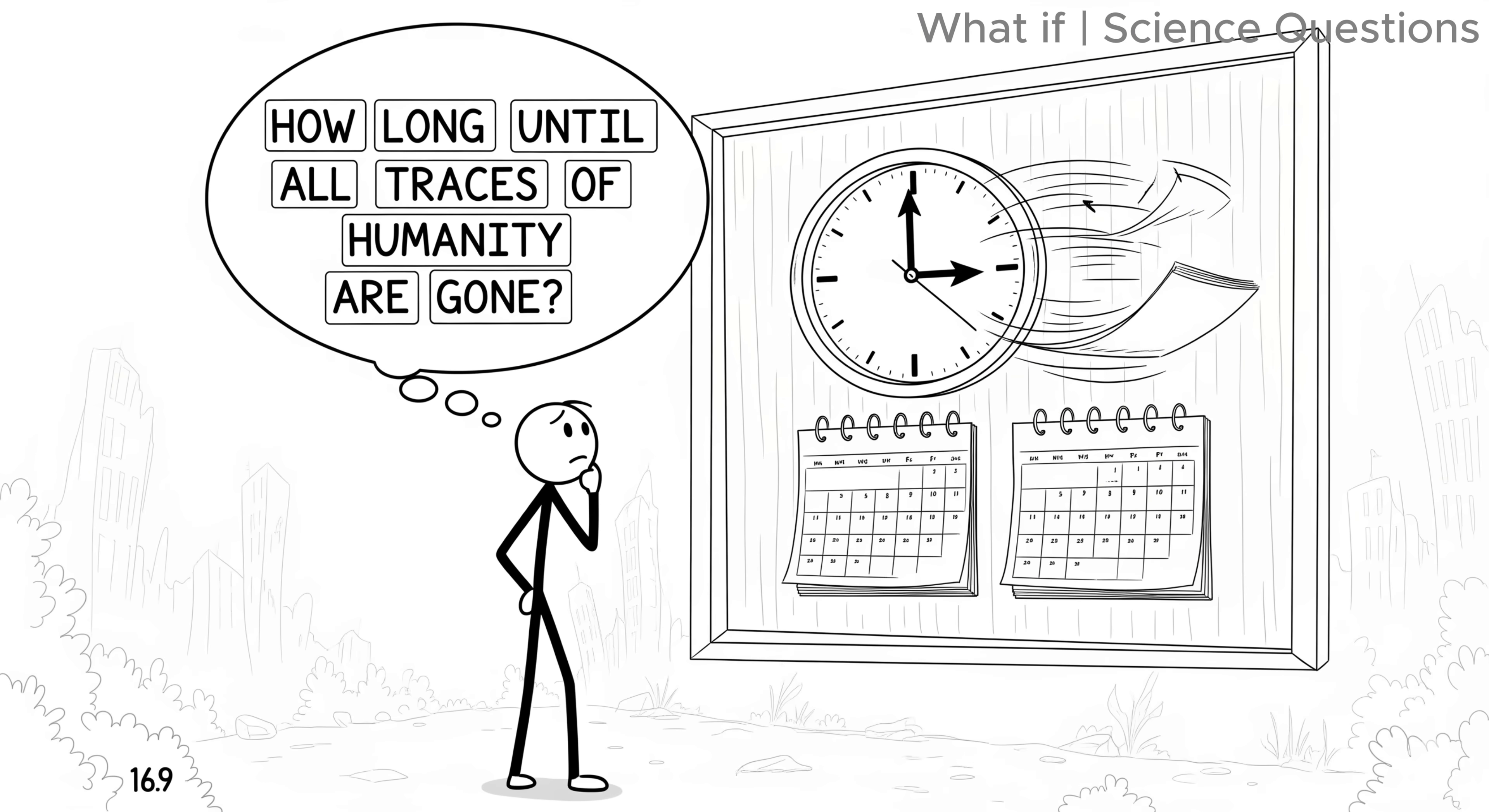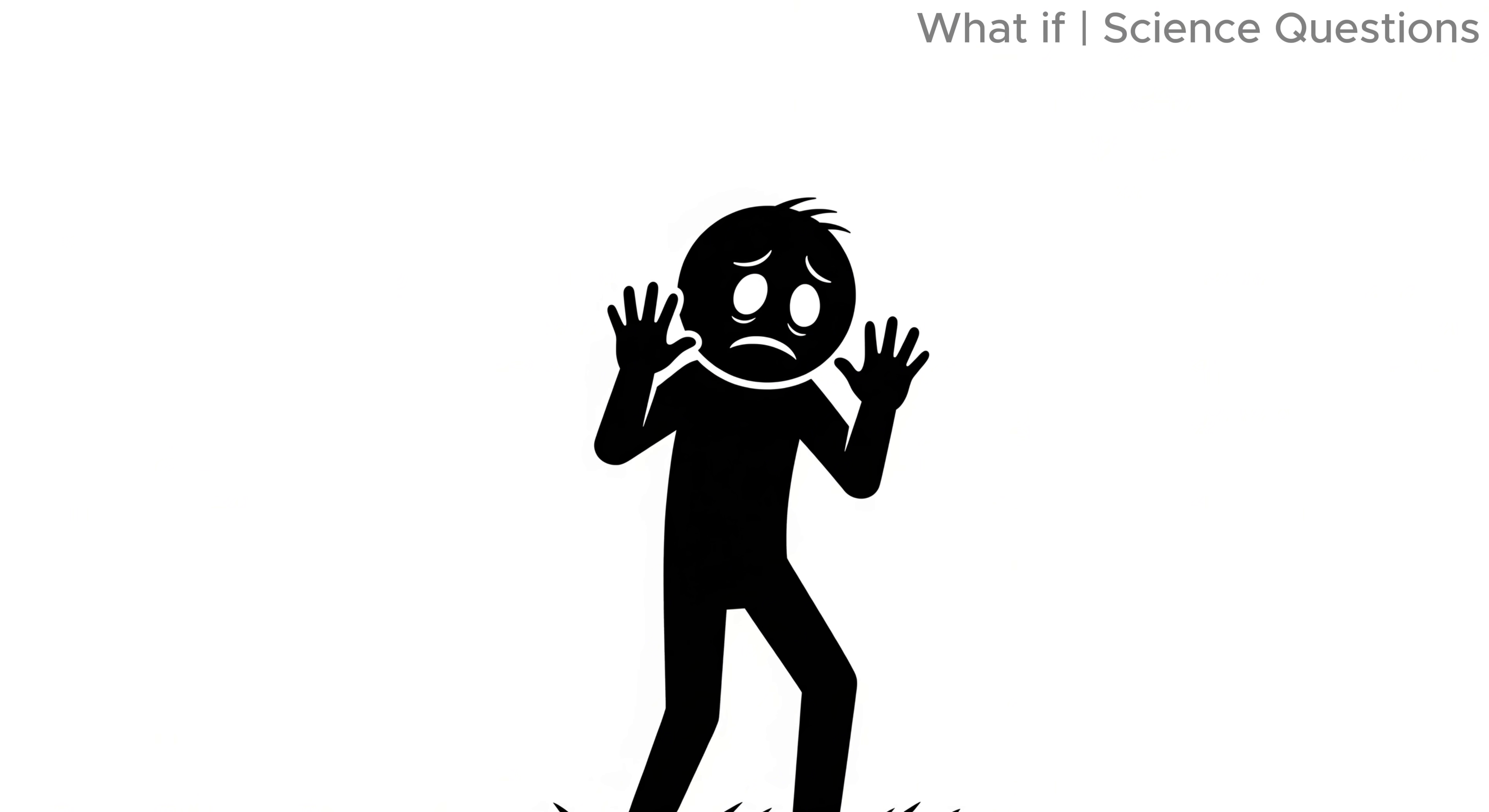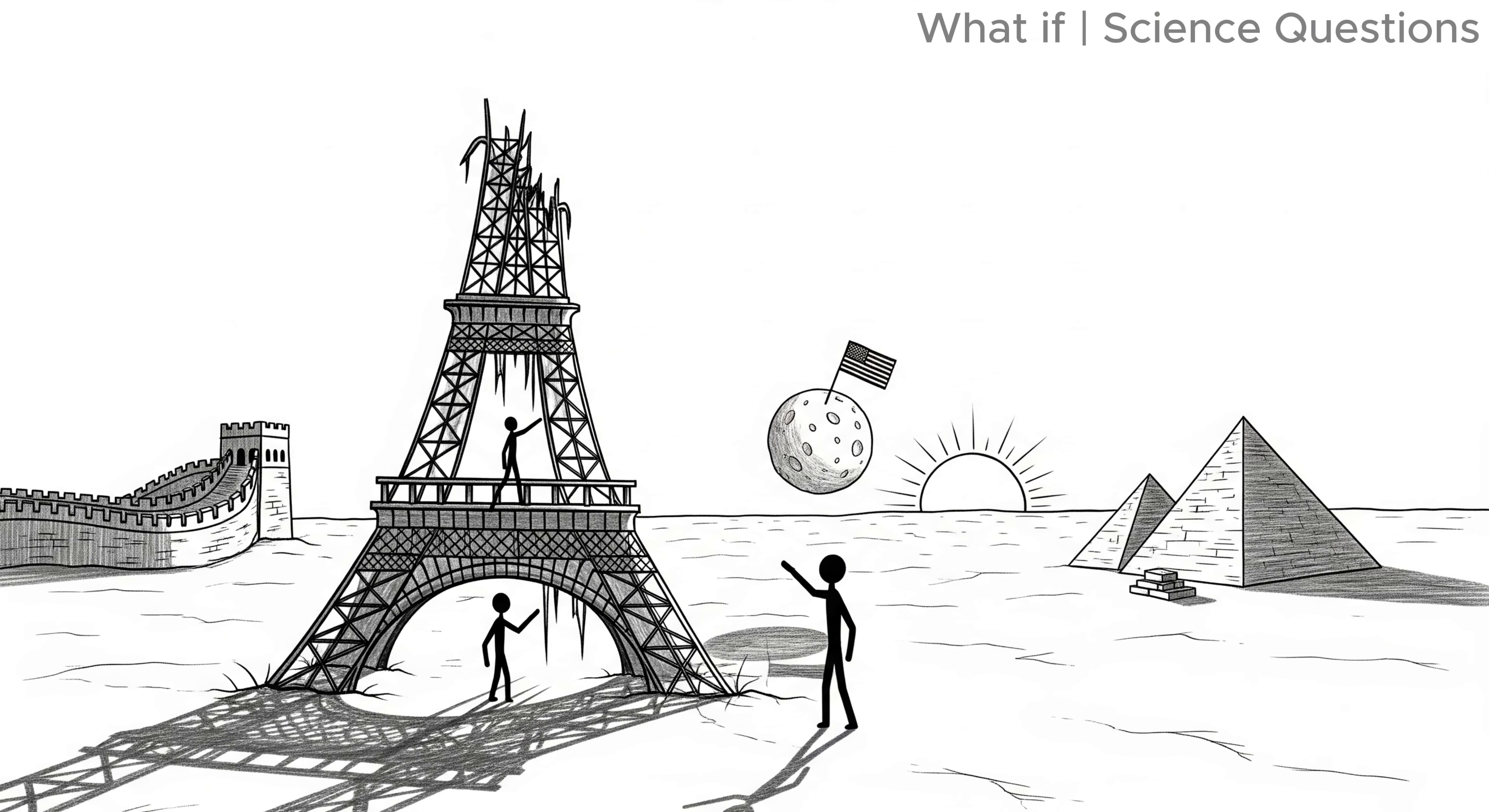So how long would it take for every trace of us to disappear? The answer is both terrifying and humbling. Within decades, our world would collapse into darkness and ruin. Within centuries, nature would consume our monuments. Within thousands of years, only the most resilient relics would remain.